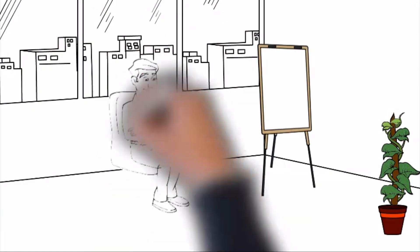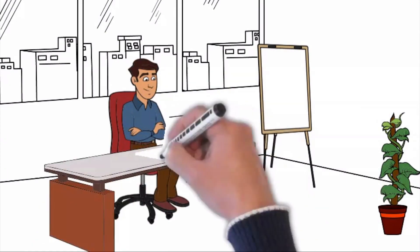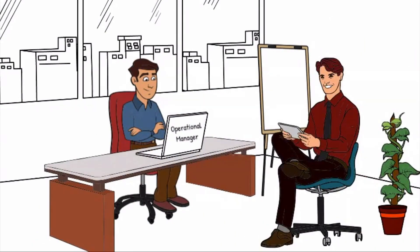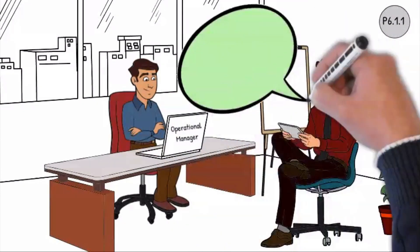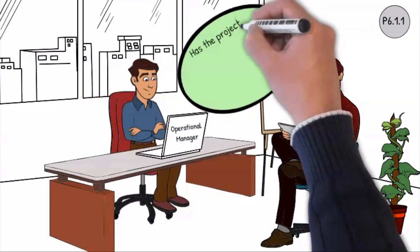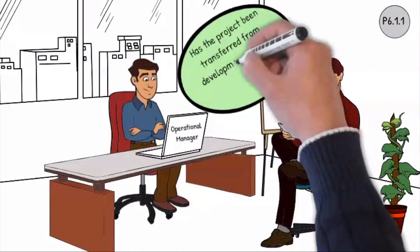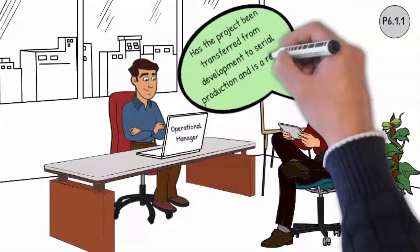Today we are going to audit the operational manager to assess how effectively he manages the production processes. Question 6.1.1: Has the project been transferred from development to serial production, and is a reliable start guaranteed?